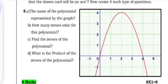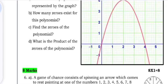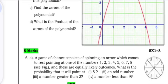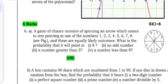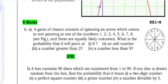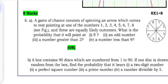Question 5: Name the polynomial represented by the graph. How many zeros exist for this polynomial? Find the zeros of the polynomial. What is the product of the zeros of the polynomial?